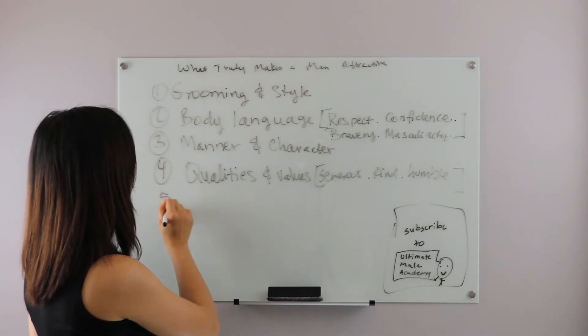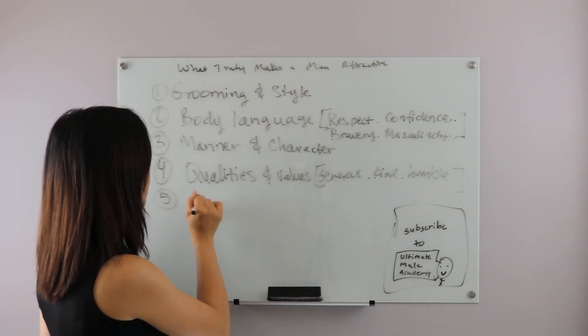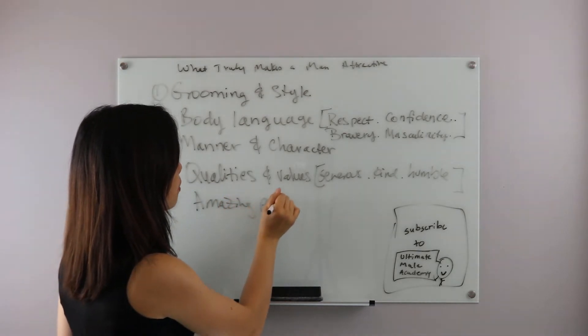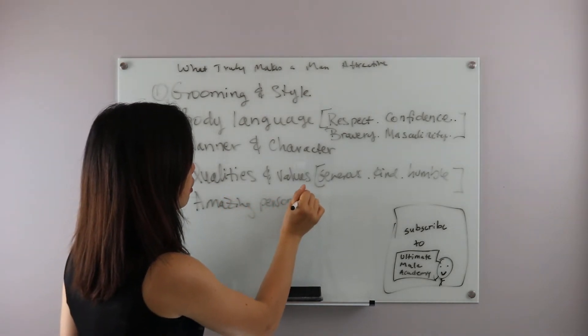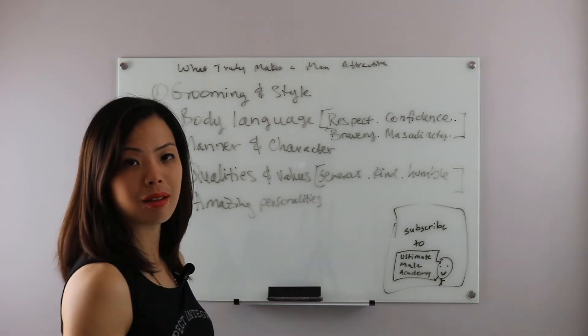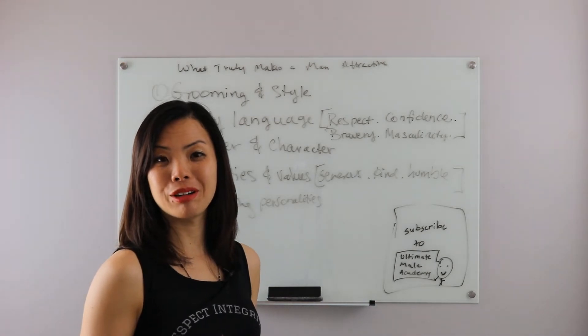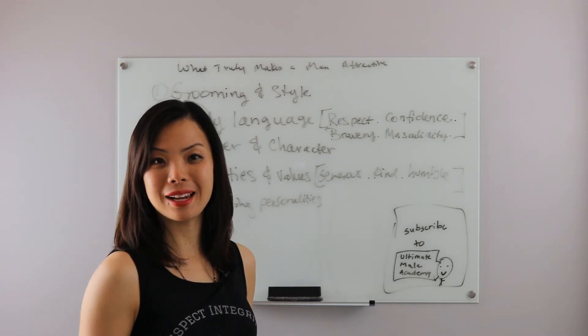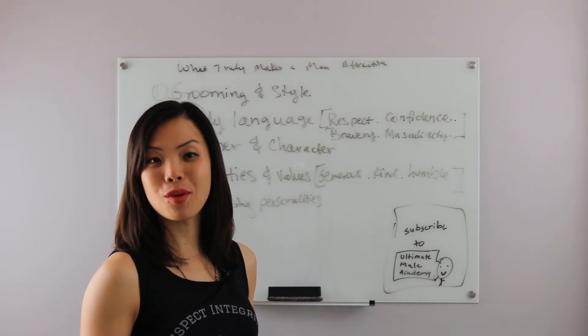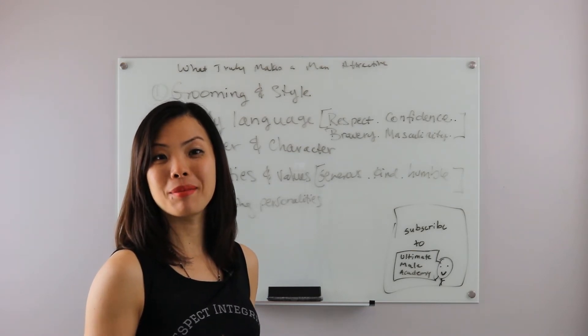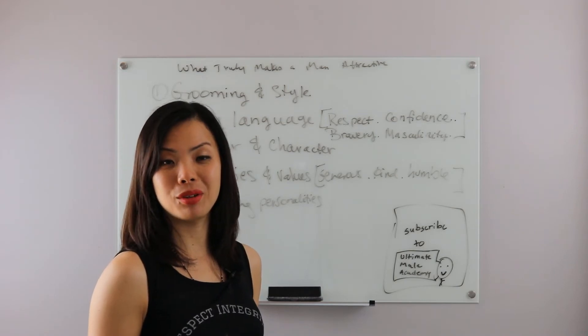The fifth thing that makes a man attractive is his amazing personality. Your personality says a lot about you. Whether people like to be around you or not is also based on your personality. How well you get along with other people is based on your personality. And when you have an amazing personality, people love to be around you.